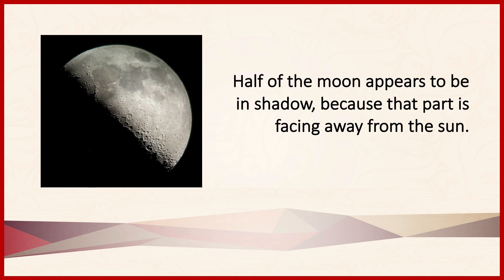By contrast, consider this example: half of the moon appears to be in shadow because that part is facing away from the sun. The main claim of this passage — that half of the moon appears to be in shadow — isn't in question. It's already accepted as true, and what's required is an explanation for why half the moon appears to be in shadow.